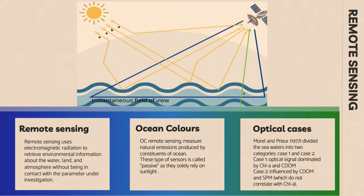Based on water composition, Morel and Prior in 1977 divided waters into two different cases: Case 1 and Case 2. Case 1 waters are optically dominated by CDOM (colored dissolved organic matter) and chlorophyll, while Case 2 waters are dominated by SPM and CDOM and do not correlate with chlorophyll A.